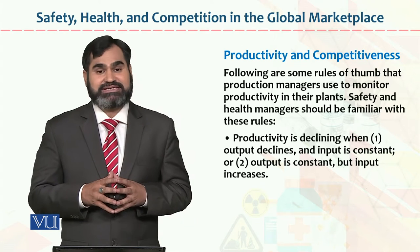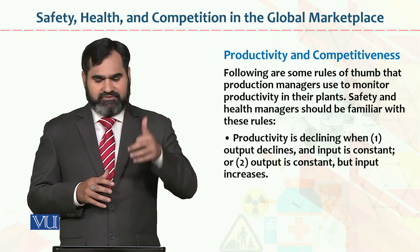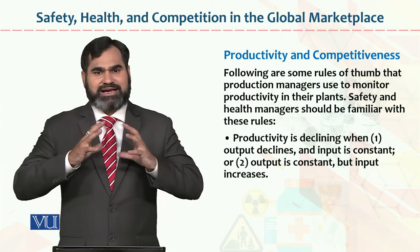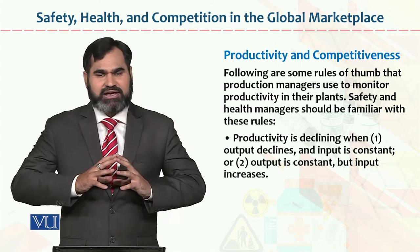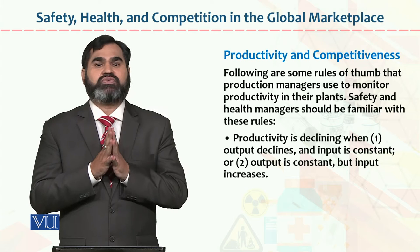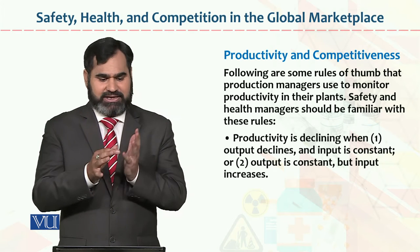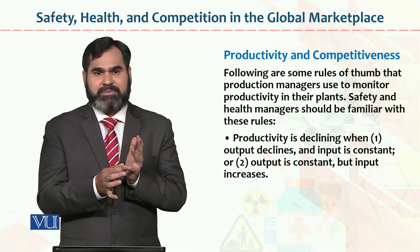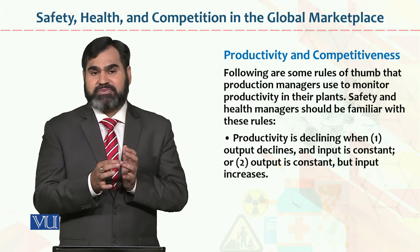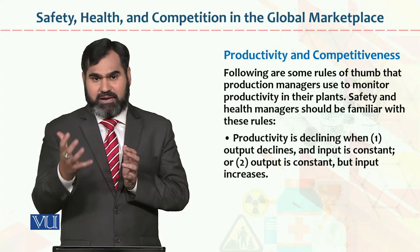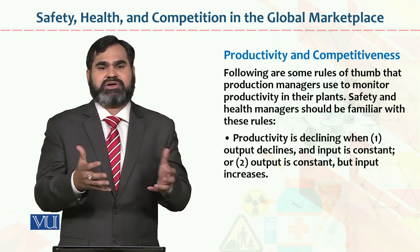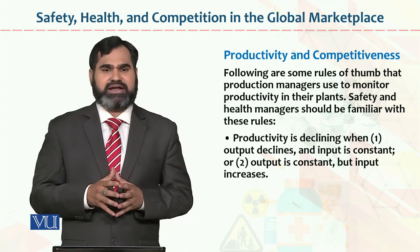Productivity is declining when outcome declines. If the outcome declines, productivity declines. There are two reasons for outcome declining: either input is insufficient, or there is leakage in the production process. If there is leakage in the production process, the outcome will be less. If the input itself is insufficient, production output will also be less.